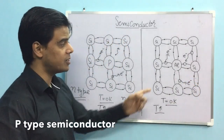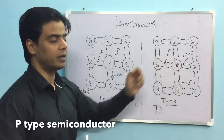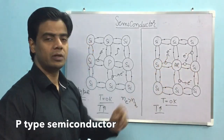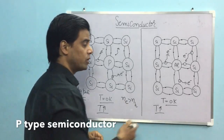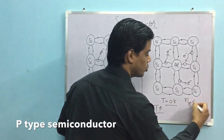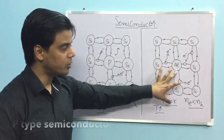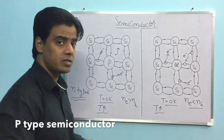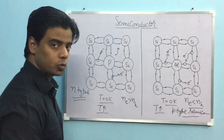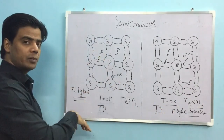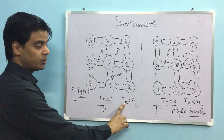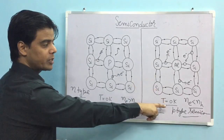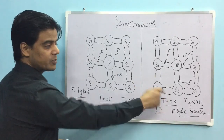Now look at the diagram. How many electrons do you have? 1, 2, and 3. How many holes? 1, 2, 3, and 4. So in this case, the number of holes is greater than the number of electrons. Such semiconductors, where holes are the majority charge carriers, are known as P-type semiconductors. With pentavalent impurity we get N-type; with trivalent impurity we get P-type.